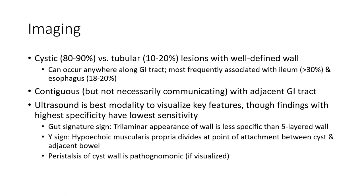The gut signature sign refers to the layered appearance of the wall. A 3-laminar wall appearance is less specific than a 5-layer wall. The double wall sign shows a hypoechoic muscularis propria visible at points of attachment between the cyst and adjacent bowel. Peristalsis of the cyst wall is pathognomonic if visualized.